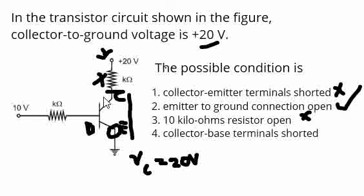So the collector-base terminals are shorted. This has nothing to do with the voltage to ground becoming 20 volts, so this is also not correct. The option here is emitter to ground connection open.